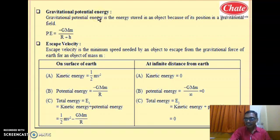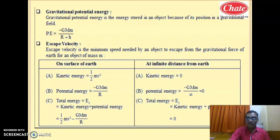At maximum height the potential energy is zero, so at lower height the potential energy must be less than zero. Less than zero means negative. Hence the gravitational potential energy is always negative.